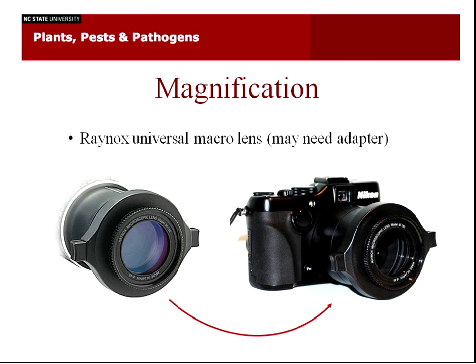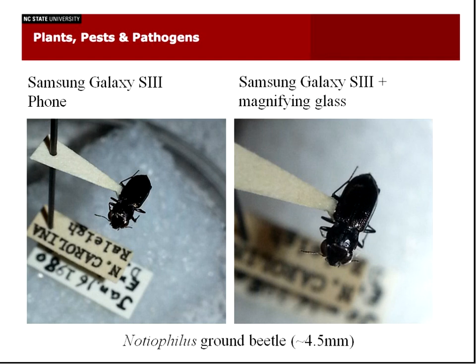For your point-and-shoots, if you're really interested in close-up photos, you can get snap-on lenses. Raynox makes a really nice one that we just got in the lab. For camera phones, you can put a plastic magnifying glass in front of it. I took this photo with my Samsung Galaxy S3 phone — this is the macro setting on the phone, and this is a little beetle about four and a half millimeters long. When I hold a magnifying glass in front of that, you can see you get a lot more detail. You can actually count the antenna segments, and that little bump in magnification can be very important and help a lot in identifications.